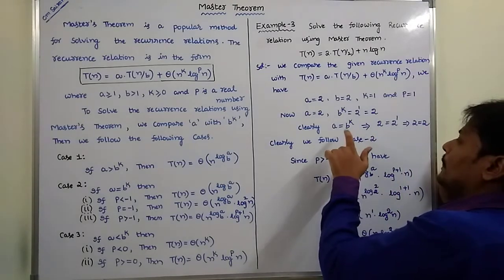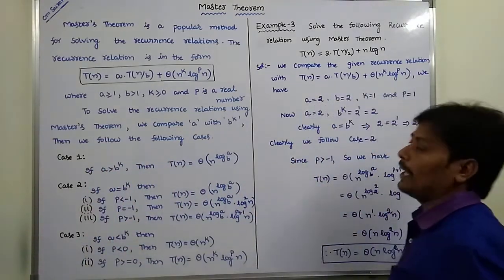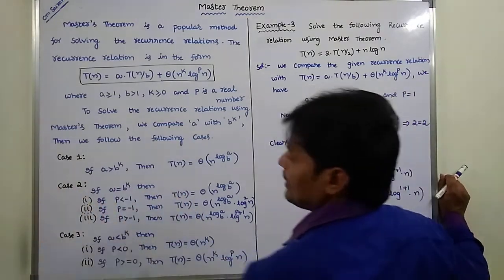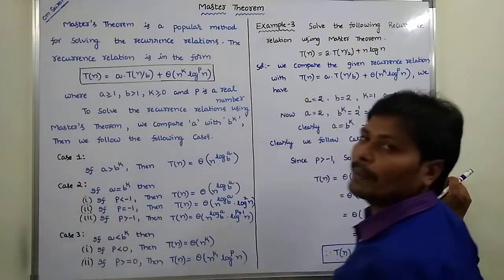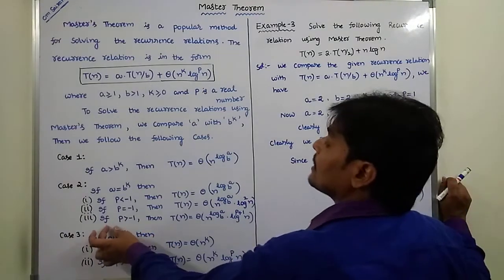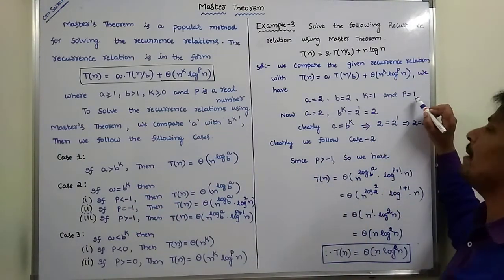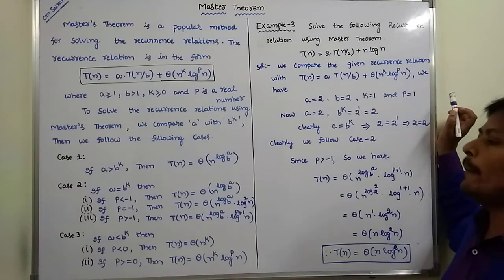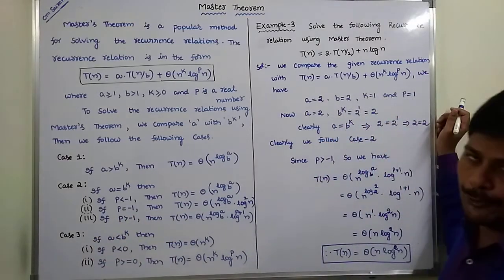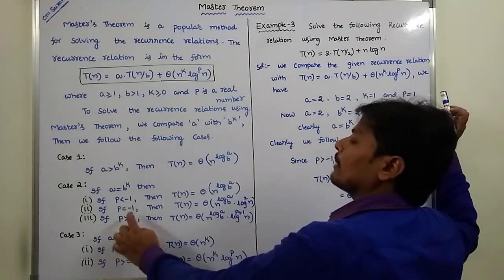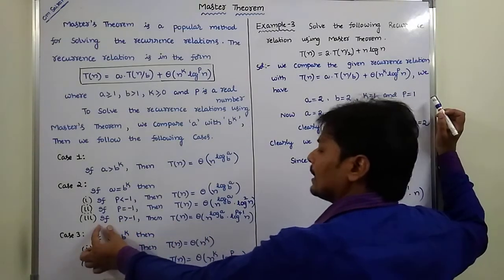Now we check which case is satisfied. Since a = b^k, Case 2 is satisfied. In Case 2, there are three sub-cases depending on the value of p. Here p = 1, and since 1 > -1, we use the third sub-case.